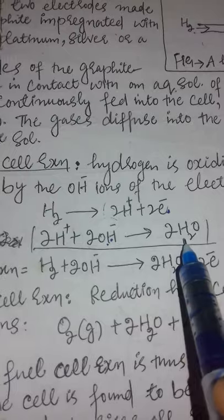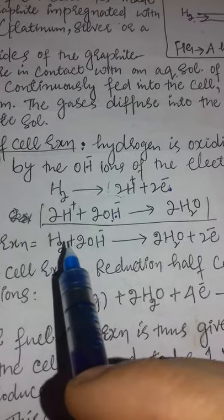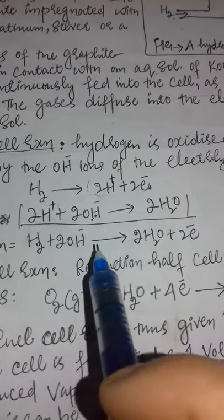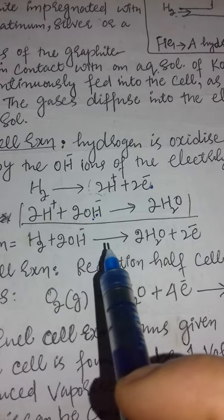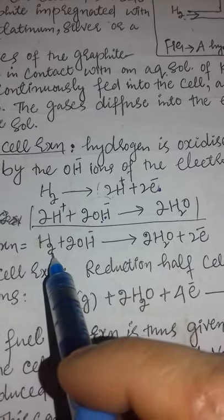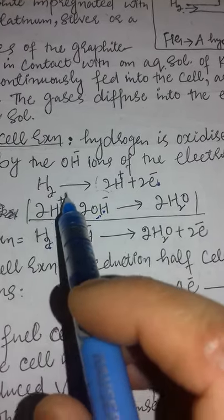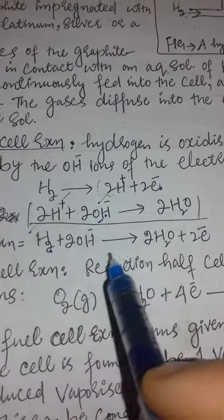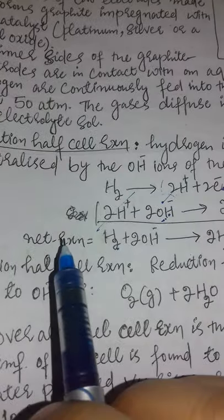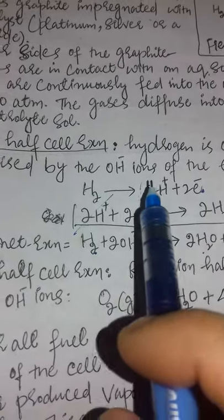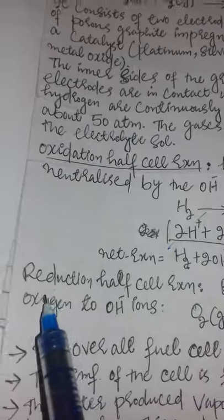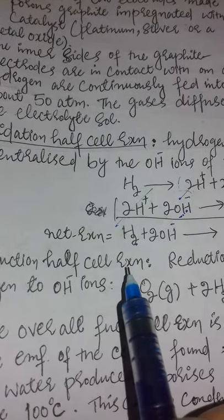Combining the steps, and cancelling out the 2H terms, the net anode half-cell reaction gives: H₂ + 2OH⁻ → 2H₂O + 2e⁻. This is the net oxidation half-cell reaction on the anode side. Now let's look at the reduction half-cell reaction, that is the cathode half-cell reaction.